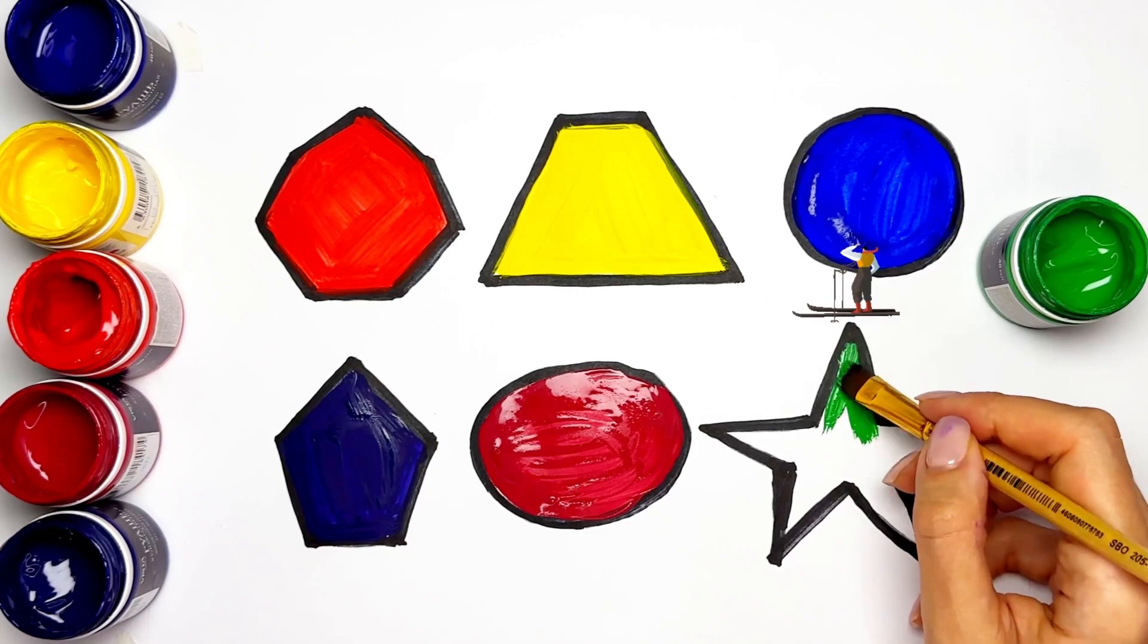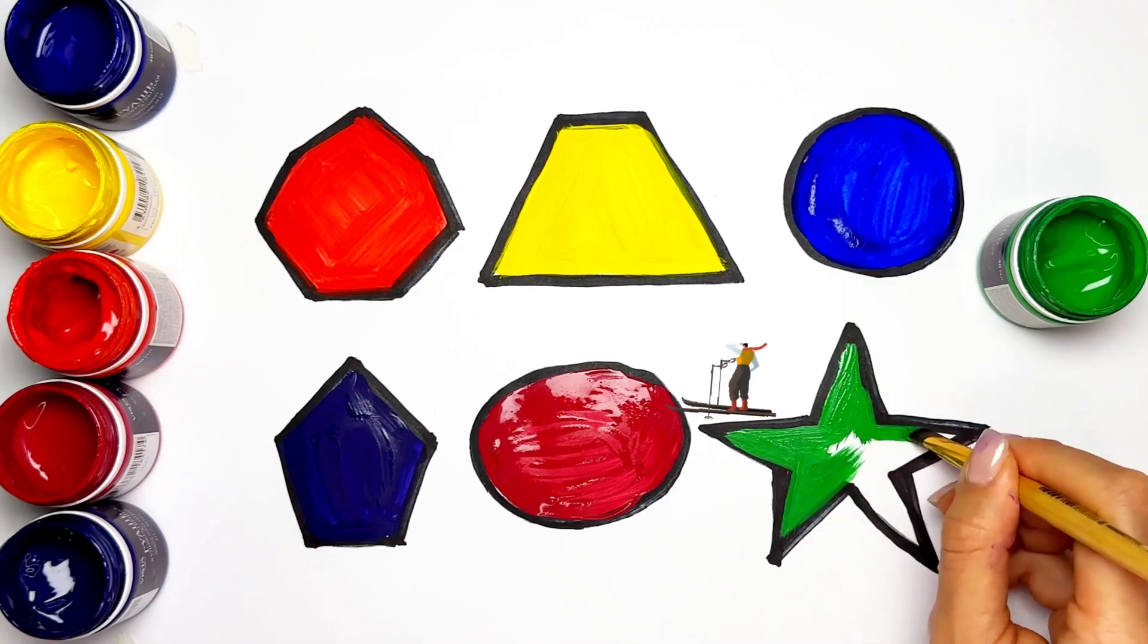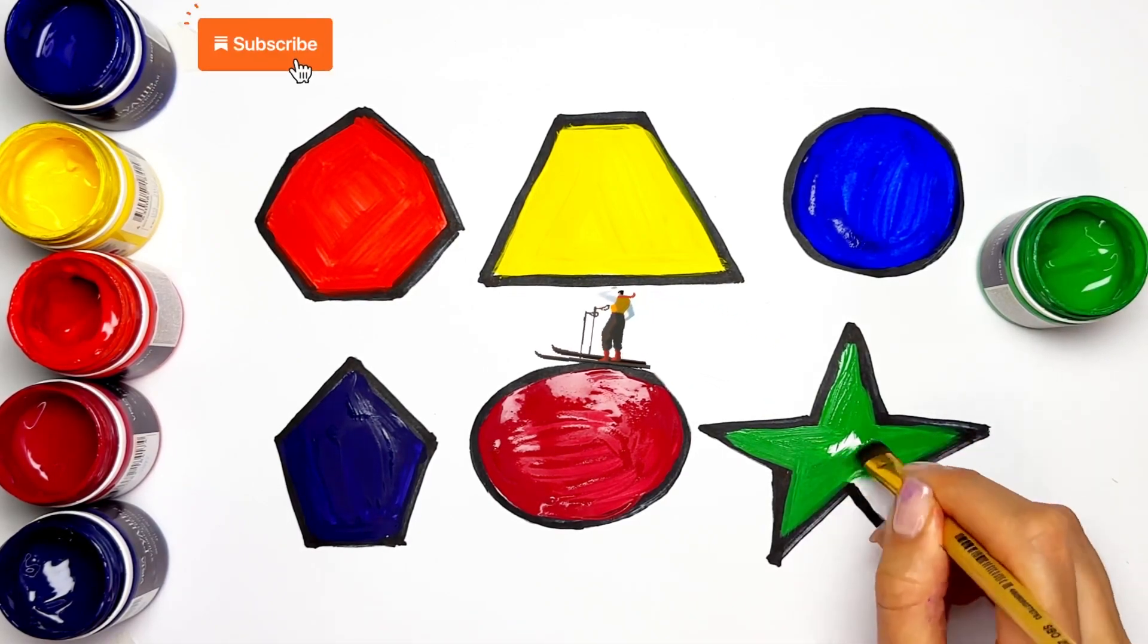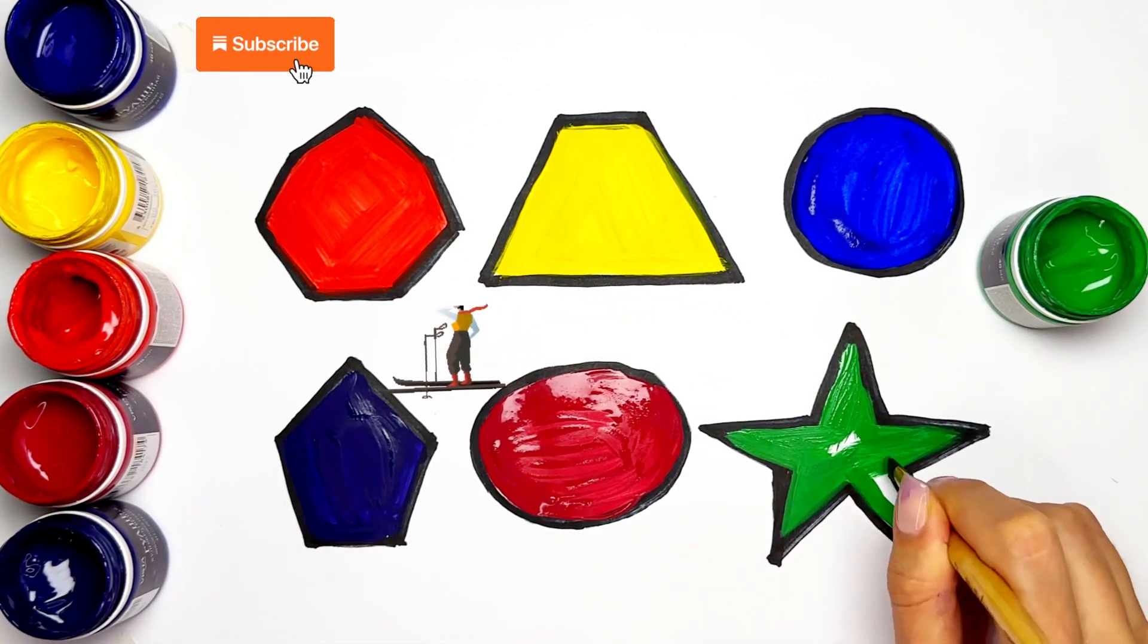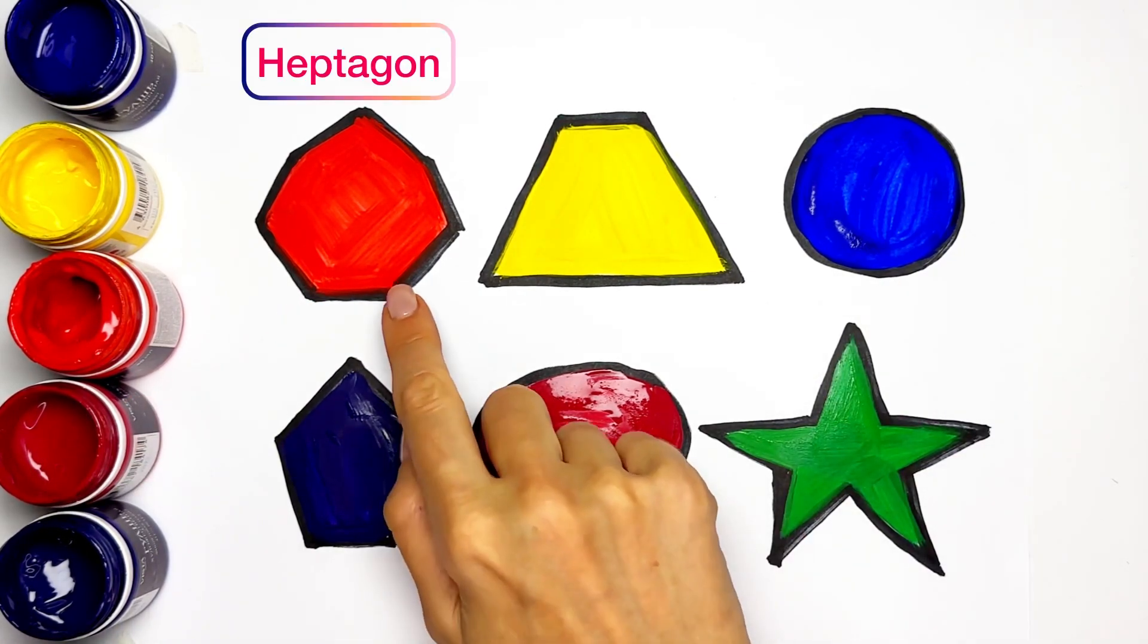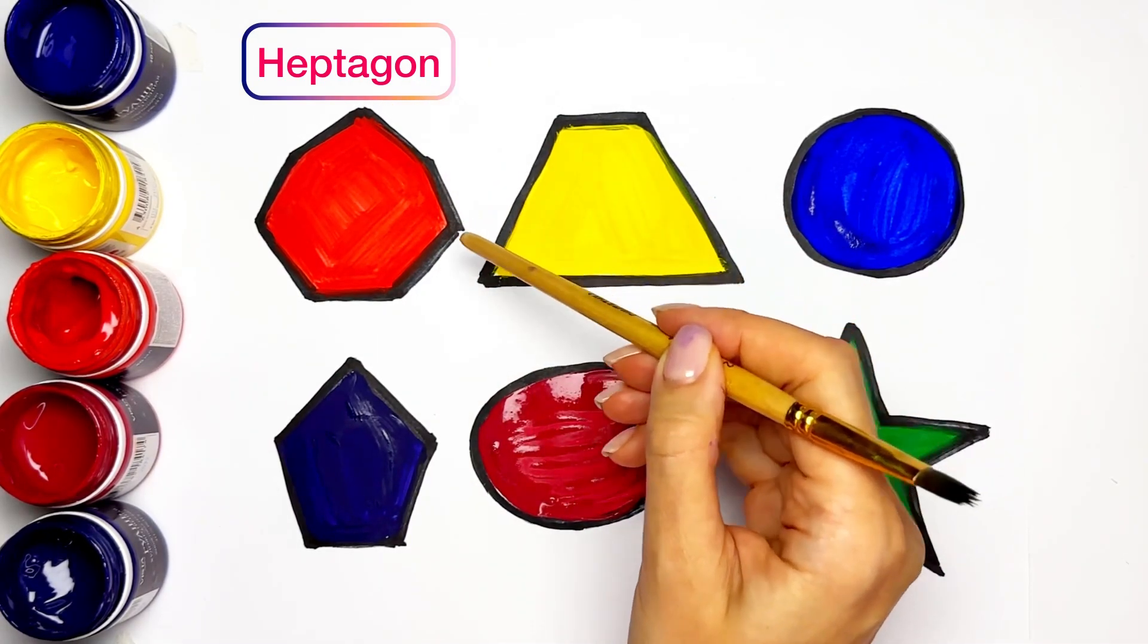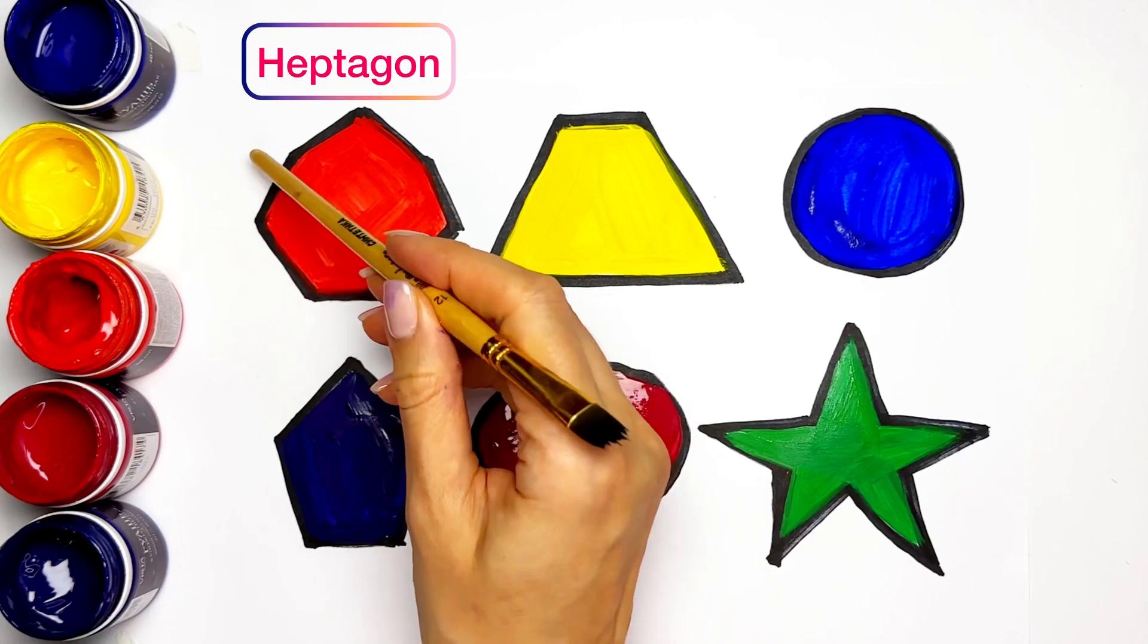Heptagon has 7 angles. One, two, three, four, five, six, seven.